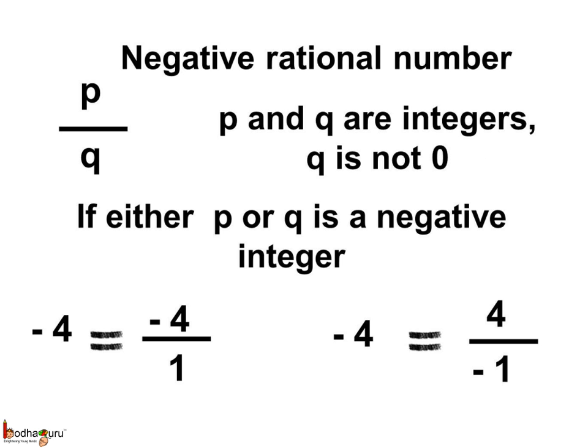As we know, integers can be negative too. So, when we express the rational numbers as the ratio of integers, that integer can be a negative number too. If either of the numerator or the denominator is negative, we call that as negative rational number.